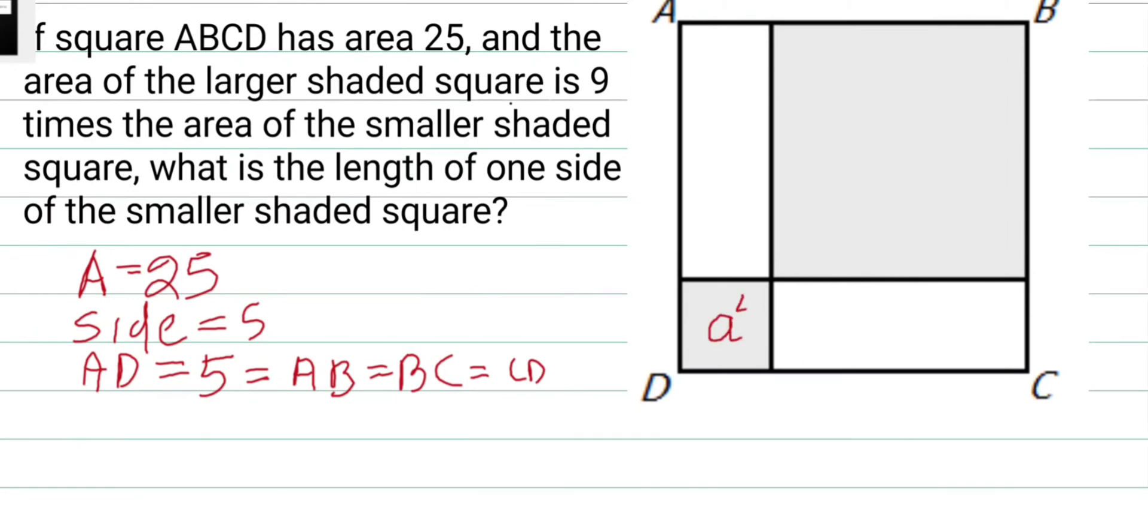one is, suppose, side a, and the area of this small square is a squared, then the area of this big square is 9a squared.